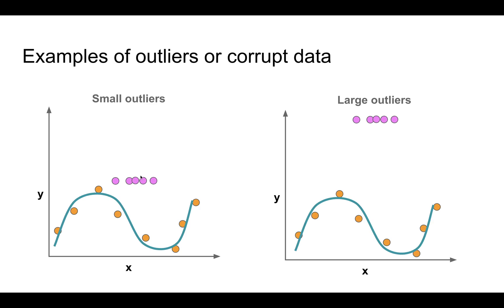The outliers can be small outliers or they could be much larger outliers. On the left hand side we can see small outliers where the value of y is different for the outliers but it's not too large. However, on the right hand side the value of y is more than double — those are the large outliers. There are ways in which even in the presence of large outliers we could get a reasonable fit to the data of interest.